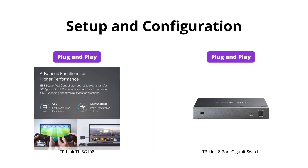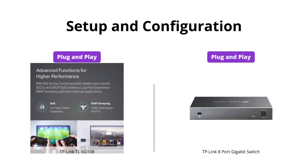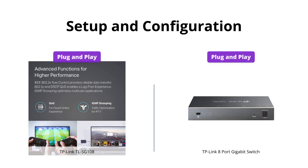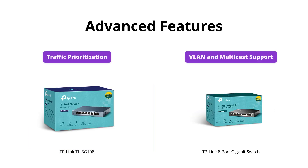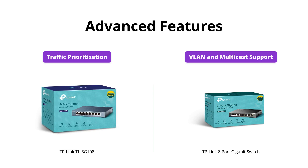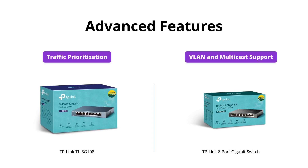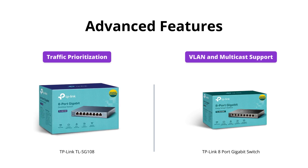Both switches are plug and play and easy to set up with no software installation or configuration needed. The TP-Link TL-SG108 allows for traffic prioritization and guarantees high quality transmission of video or voice data with port-based 802.1p, DSCP codes, and IGMP snooping. The TP-Link 8 port gigabit switch allows for VLAN features that improve network security via traffic segmentation and IGMP snooping that optimizes multicast applications.